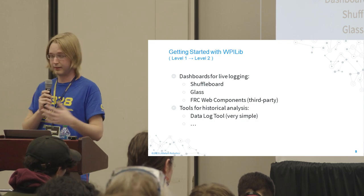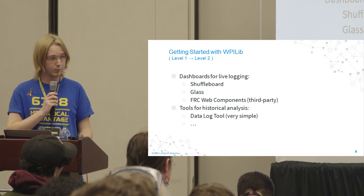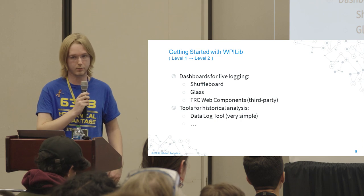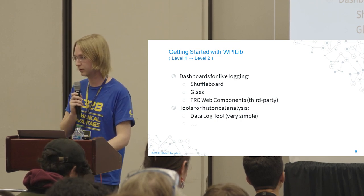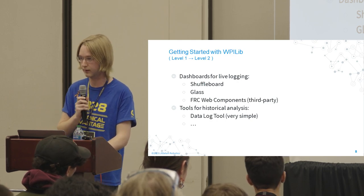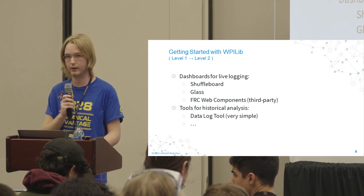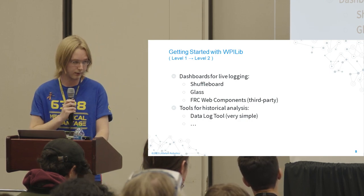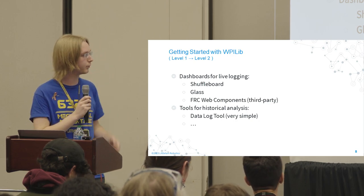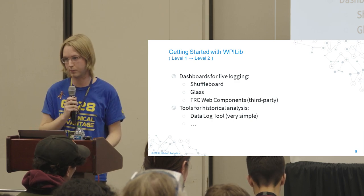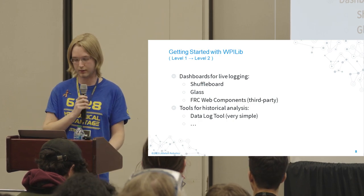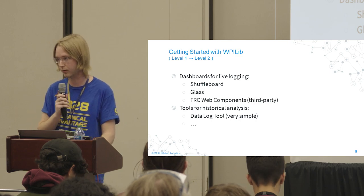Viewing the data is the other really important half of this. The primary dashboards useful for live logging are Shuffleboard, which is primarily designed for on-field use; Glass, mostly designed for programmers; and FRC Web Components, a third-party option. For historical analysis, WPILib's built-in tools are more sparse — the data log tool allows you to download log files from the RIO and convert them to CSV, but doesn't do more complex visualization.